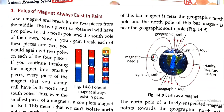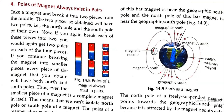Take a magnet and break it into two pieces from the middle. The two pieces obtained will each have two poles — a north pole and a south pole of their own. So we have to say that a magnet always exists with two poles. This north pole and this south pole don't mean the north pole is different and the south pole is completely separate.